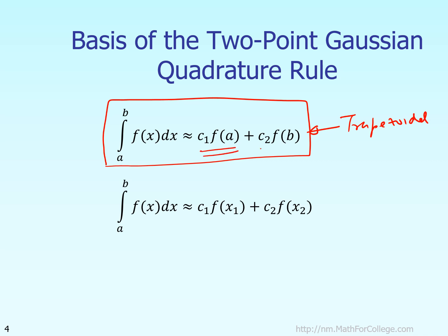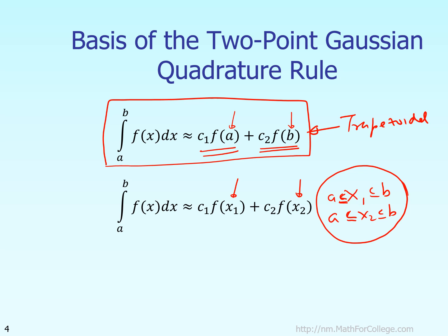Now let's see how this relates to the two-point Gaussian quadrature rule. For the trapezoidal rule, we fixed the quadrature points at A and B, leaving only C1 and C2 as choices. The two-point Gaussian quadrature rule is different: we don't fix the points. Instead, we choose them as x1 and x2, with the restriction that both x1 and x2 must lie between A and B. This gives us four unknowns: C1, x1, C2, and x2.